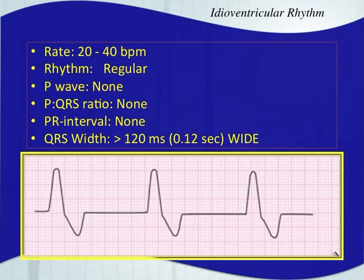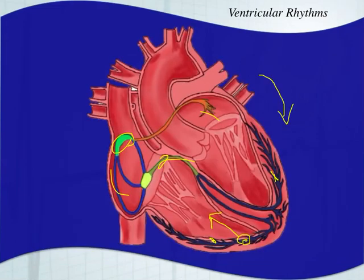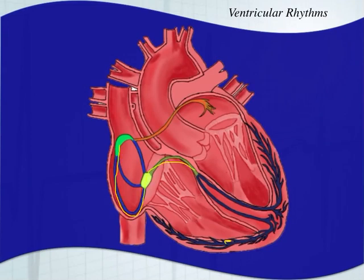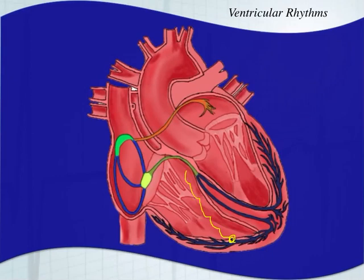You just see an idioventricular escape rhythm, which is a wide QRS complex — greater than three small boxes wide. This is the first arrhythmia we've said can do that, and that's by nature, because with the ventricular rhythm, you're depolarizing outside of the normal conduction system. This is the highway, the fast road. With the idioventricular rhythm or any ventricular rhythm, you're going outside the highway — taking the back roads, going from cell to cell to cell, which is much slower than taking the normal conduction system.